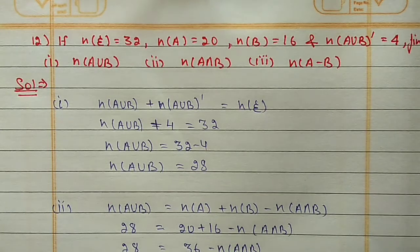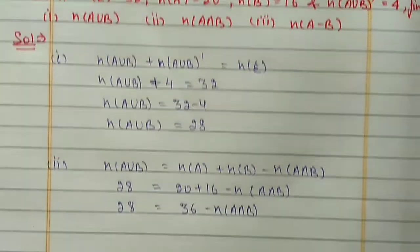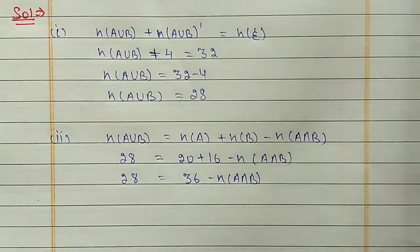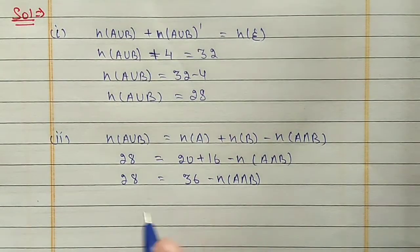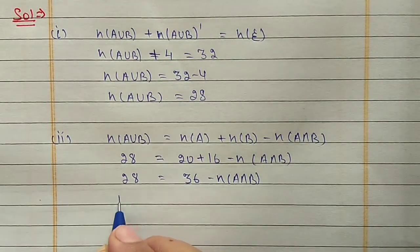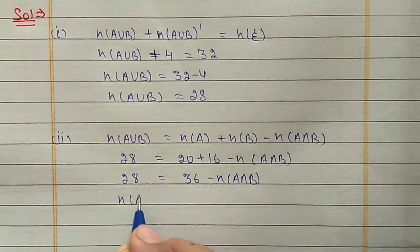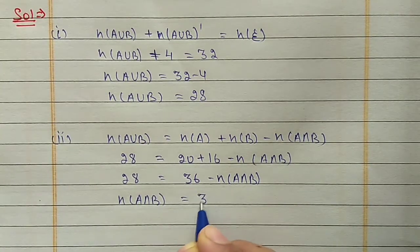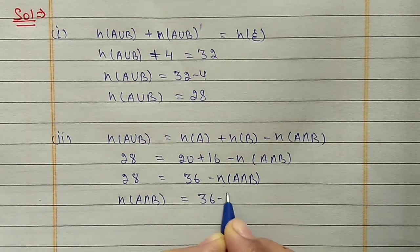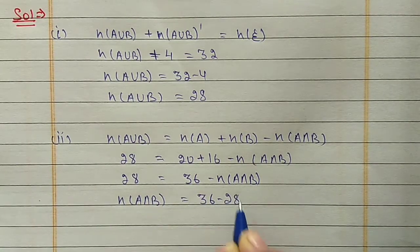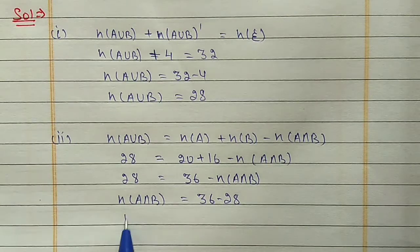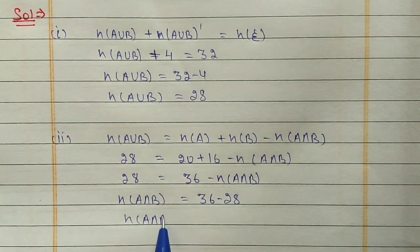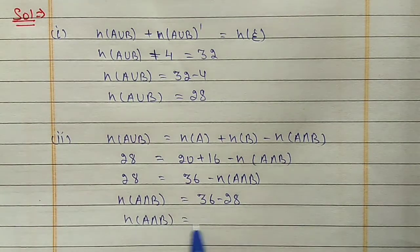Shifting -N(A∩B) to the left side and 28 to the right side: N(A∩B) = 36 - 28 = 8.